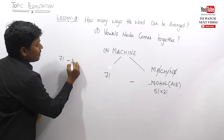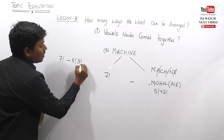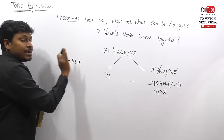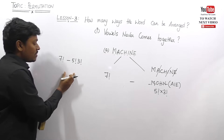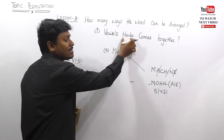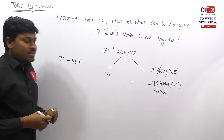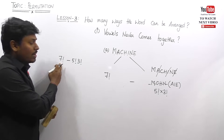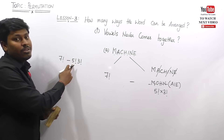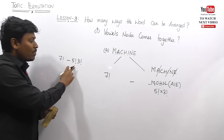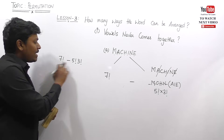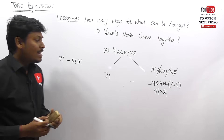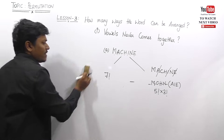Our target is to find how many ways the vowels never come together. So the final answer will be: seven factorial minus five factorial × three factorial. We are eliminating all arrangements where vowels come together, so the resultant answer will be vowels never come together. Seven factorial is 5040, three factorial is 6, five factorial is 120 — so 120 × 6 = 720. Subtract to get the answer.